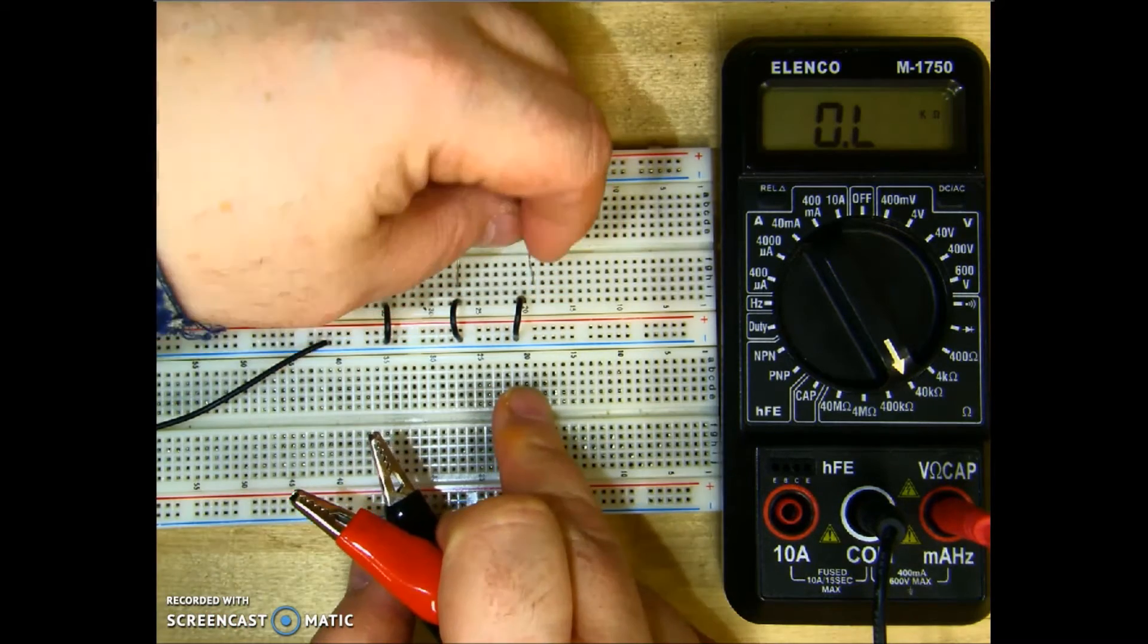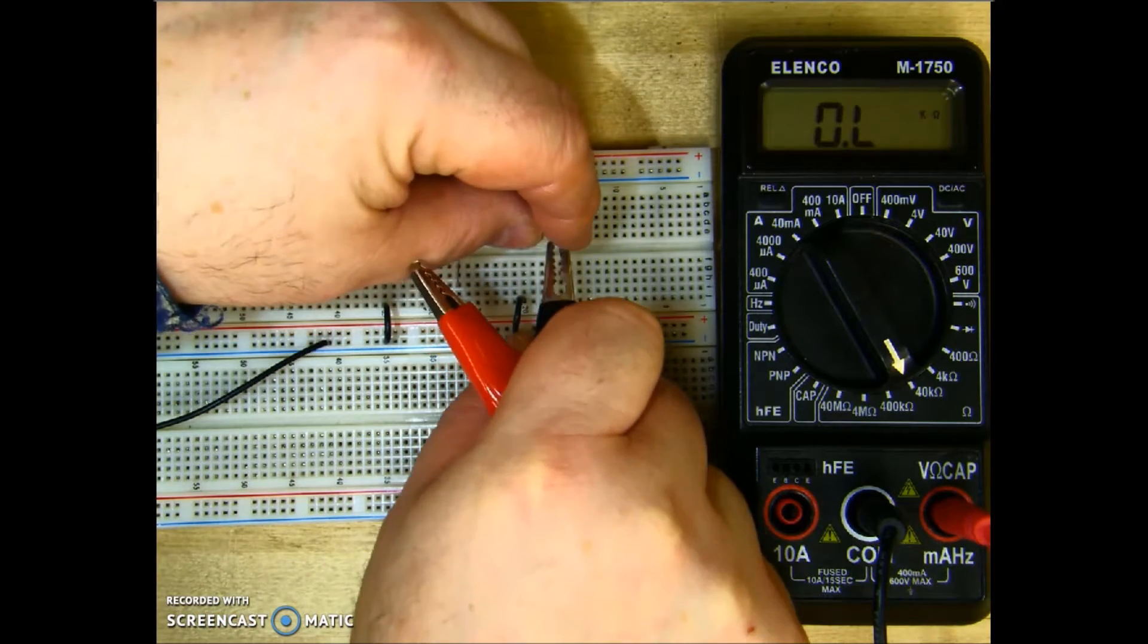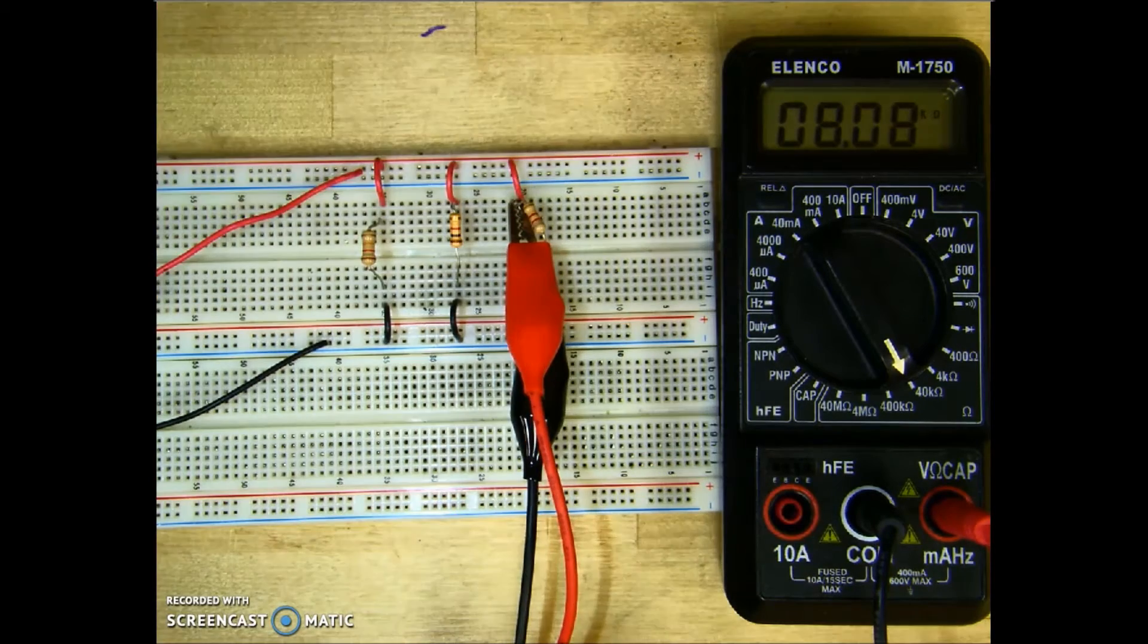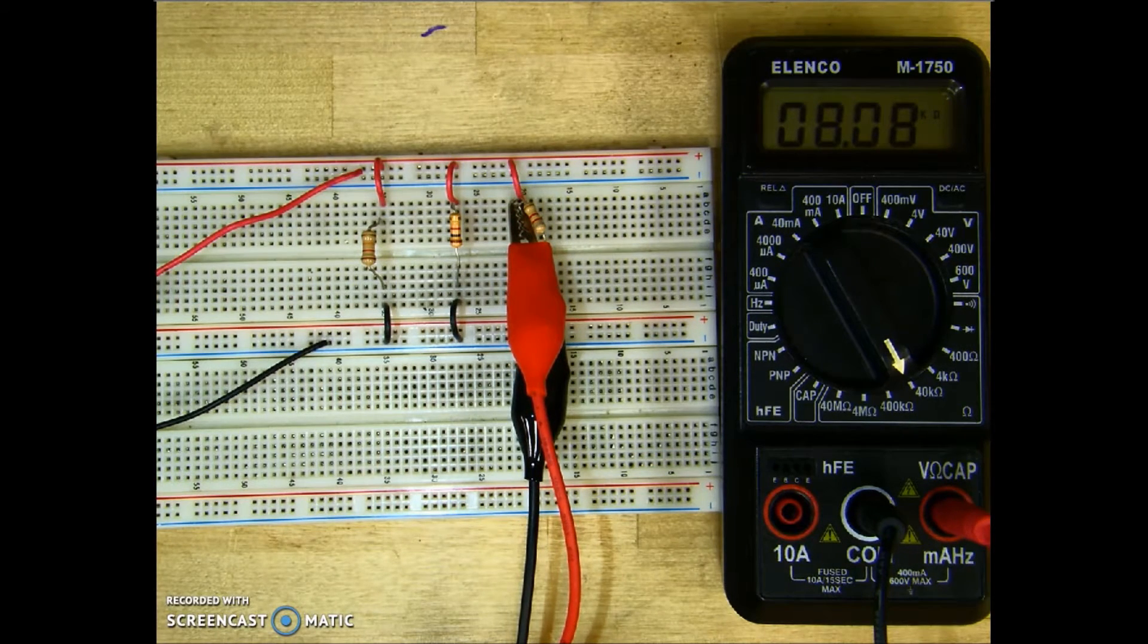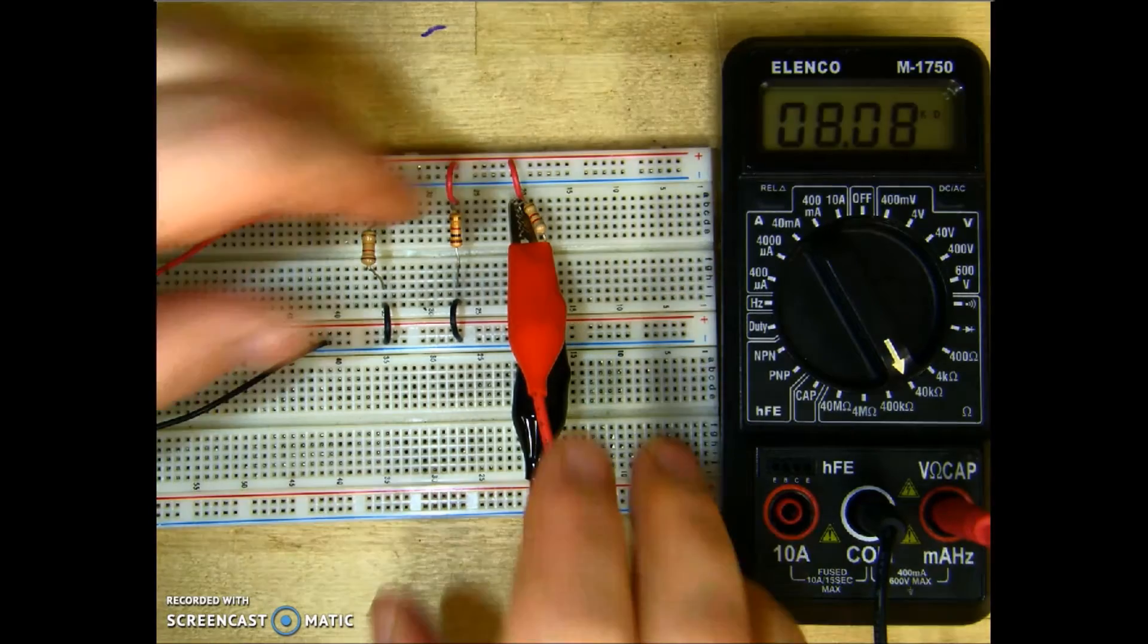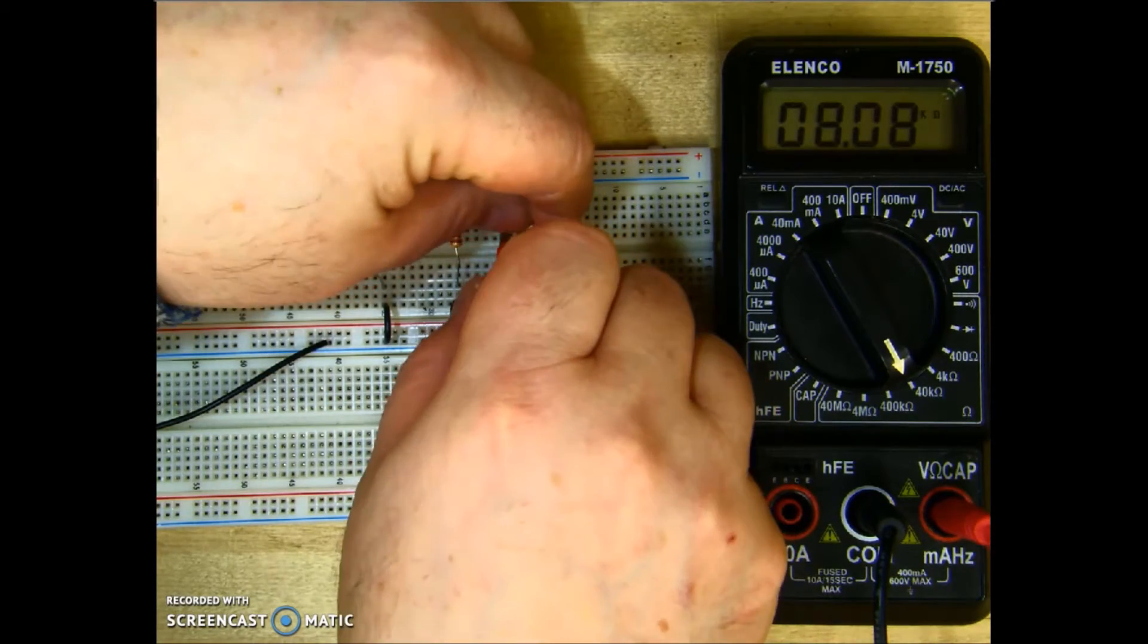And I'll measure R3, pull its terminal out, connect up, and I get 8.08k. That one's a little bit low but still within tolerance level.